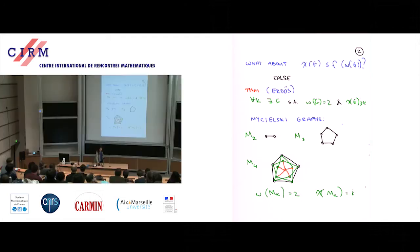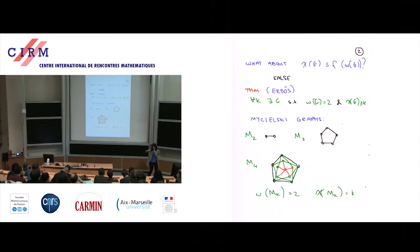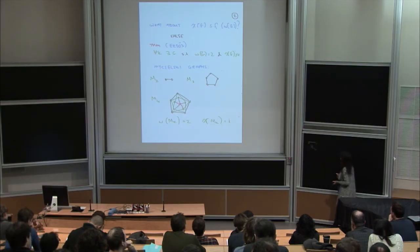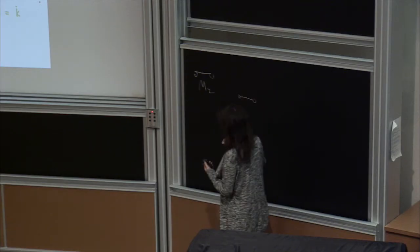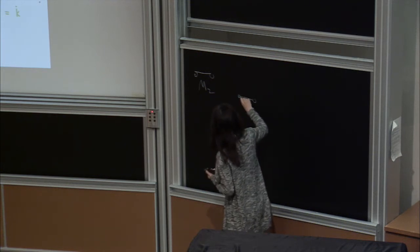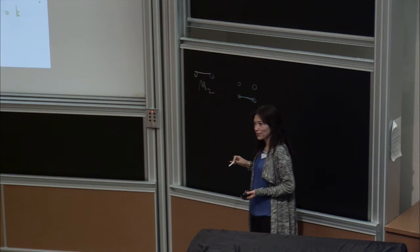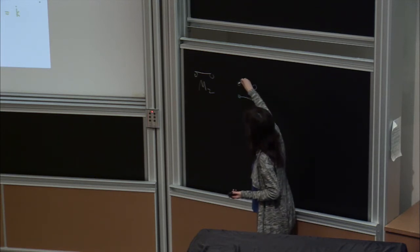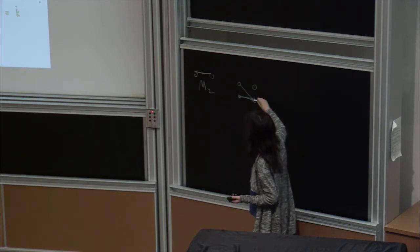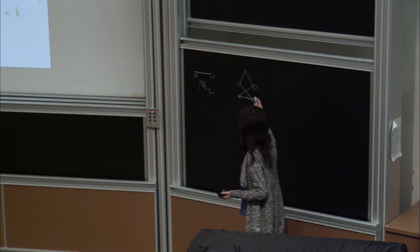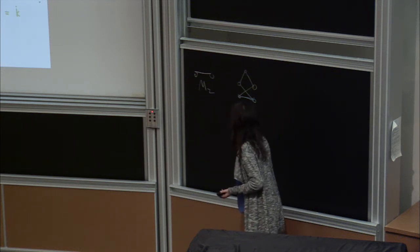Erdős's stronger result is probabilistic, but Mycielski's construction is something you can just build. We're going to build a sequence of graphs so that the k-th graph has clique number two and chromatic number k. So this is M2 — we start with M2. To get M3 from M2, you take a copy of M2 and copy each vertex, making each copy adjacent to the neighbors of its original. Then you add a new vertex adjacent to all the copies.